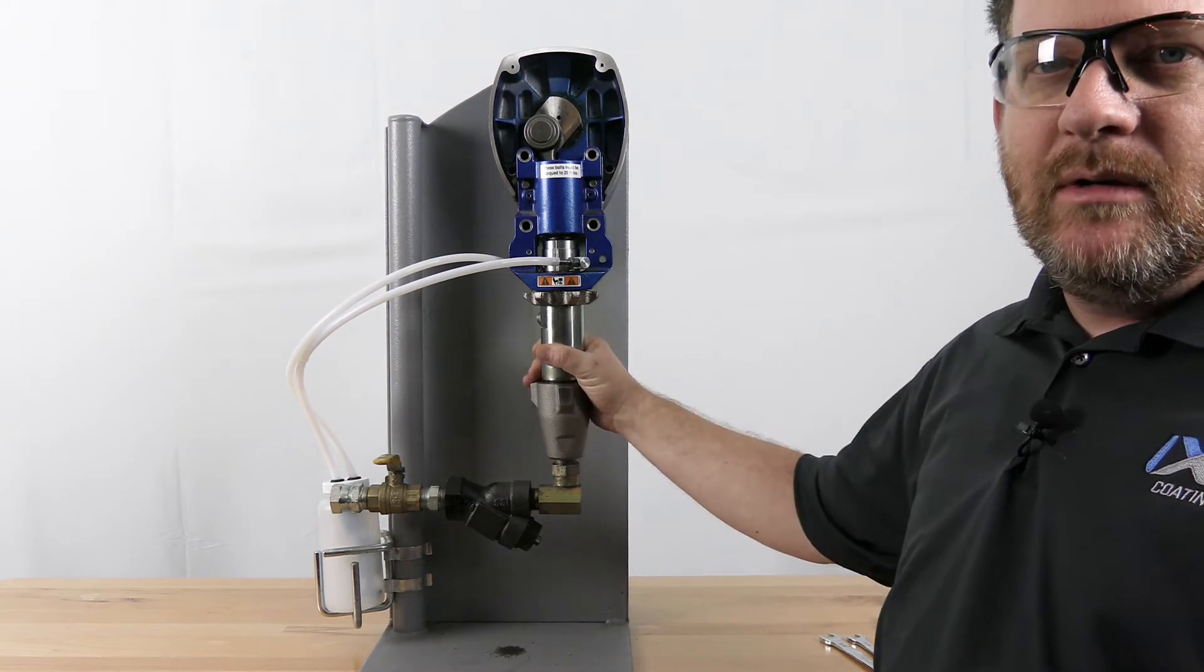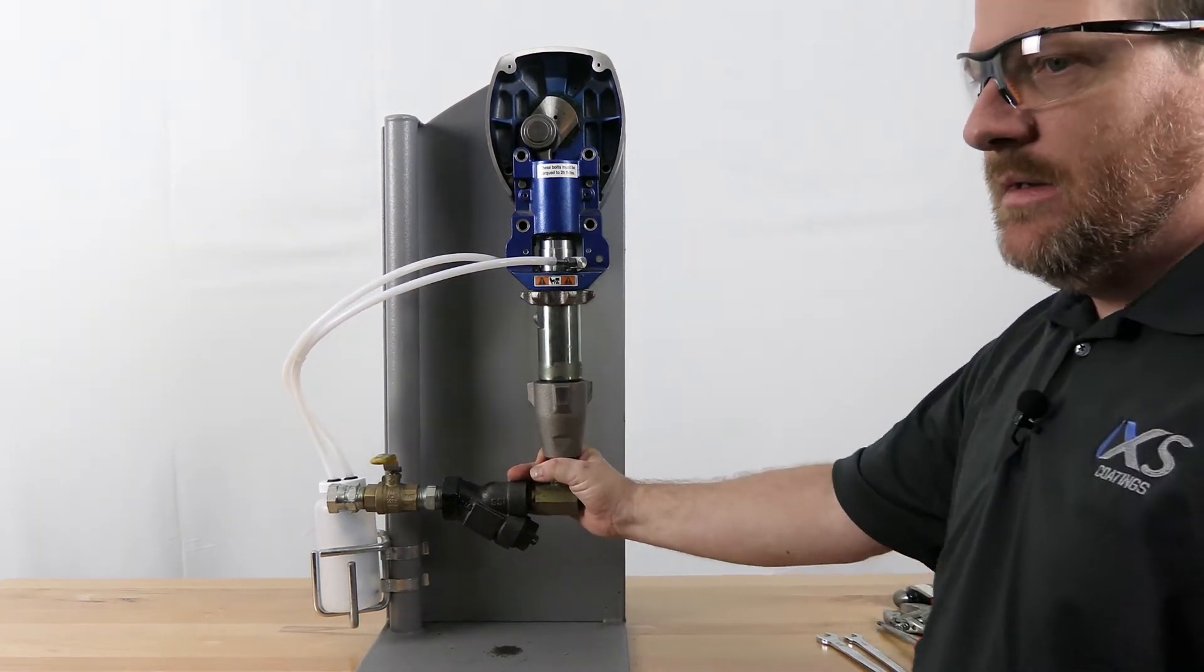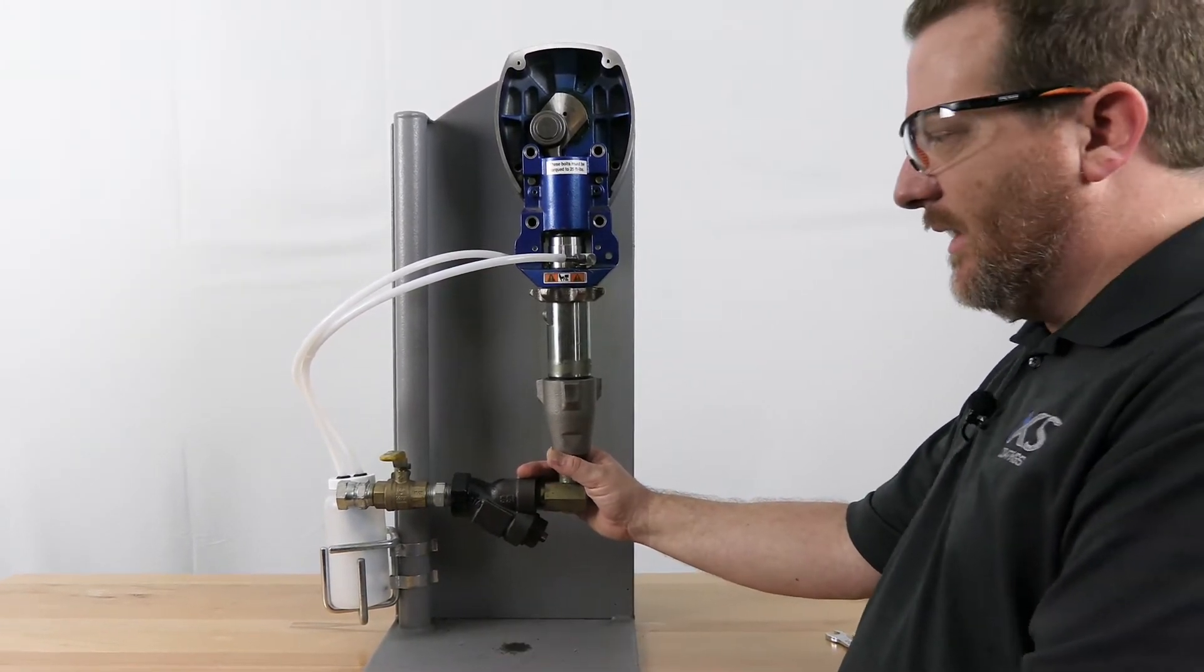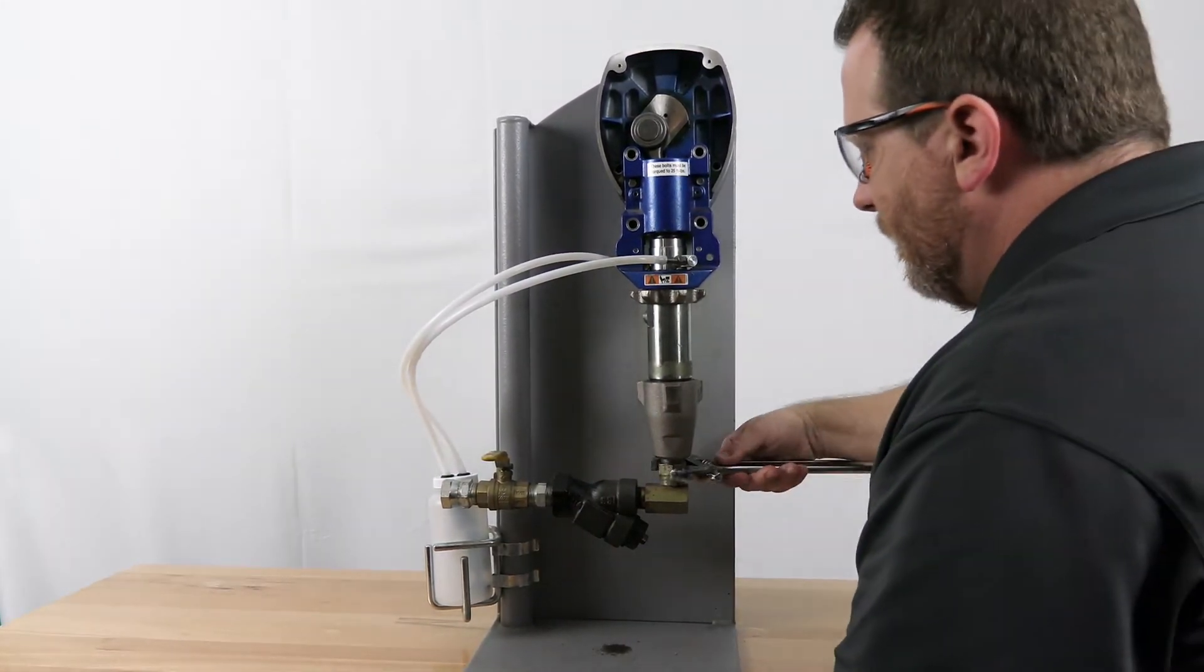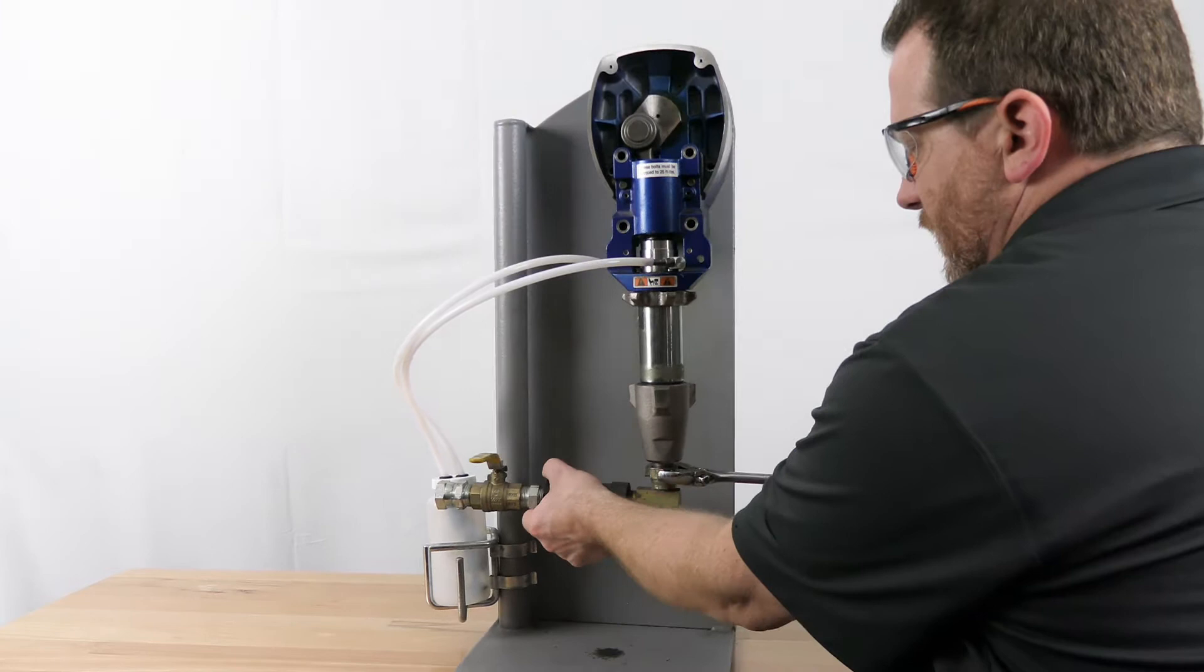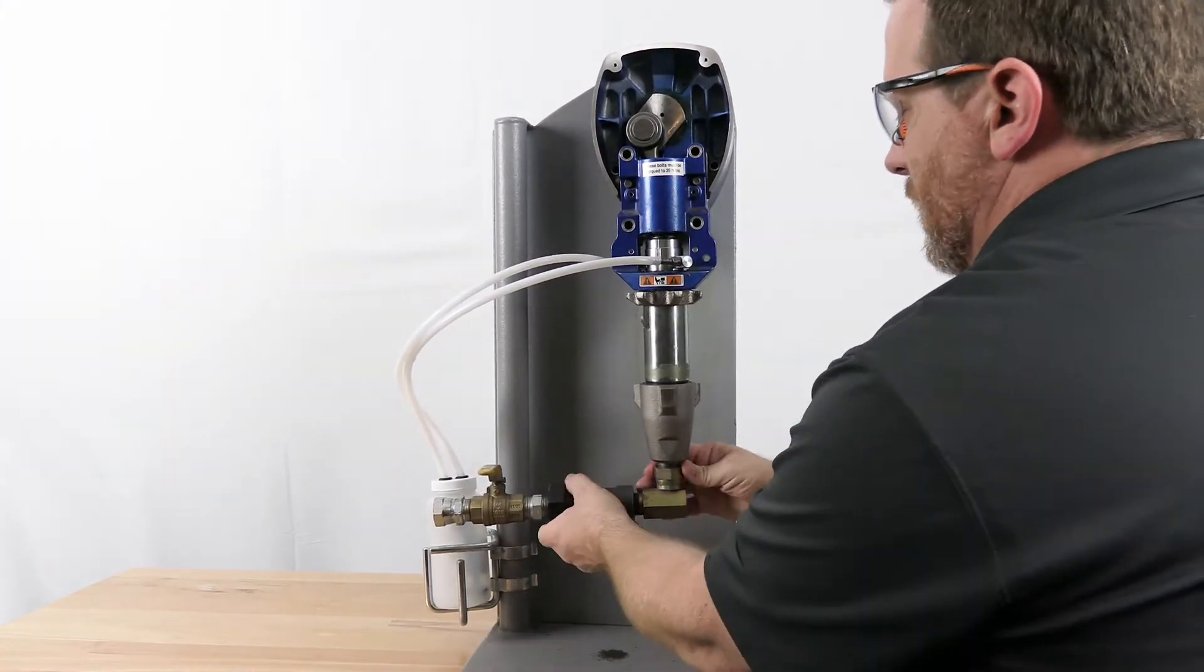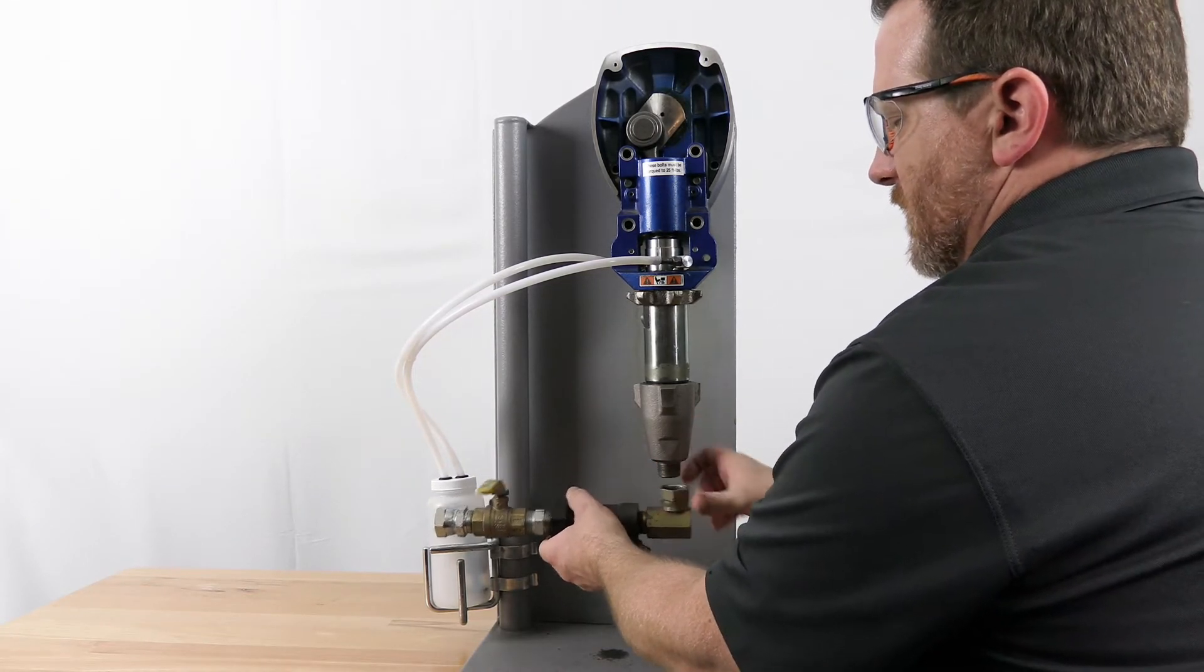First off, before you take anything apart, make sure your barrel pump is unplugged, no air pressure, no fluid pressure coming in, make sure your valve is off, and then open up this system.